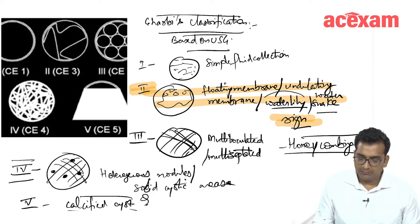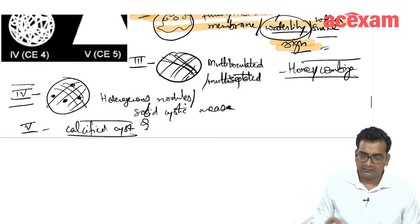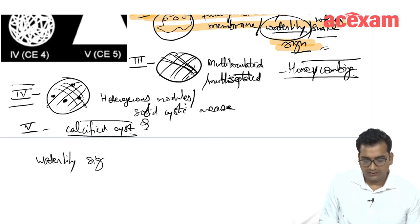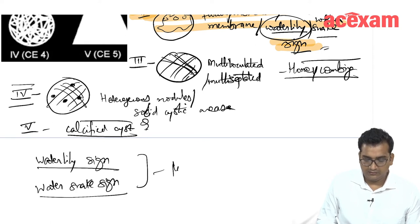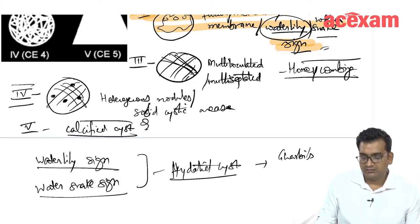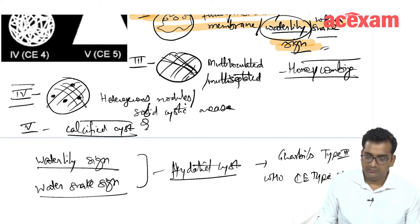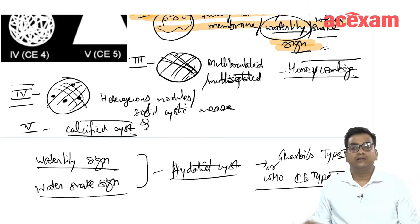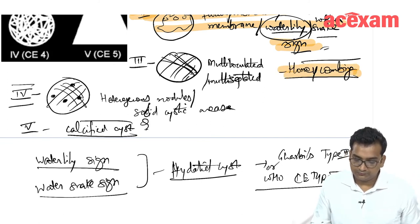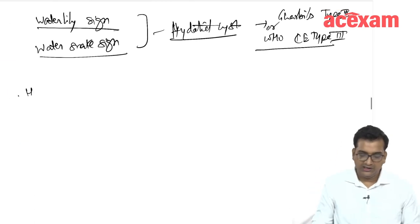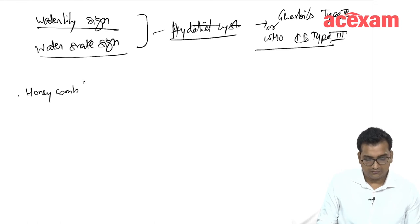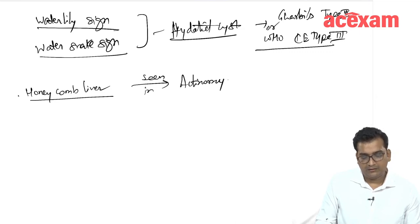Garbi's Type 4 is multiloculated and multi-septated with heterogeneous nodules or solid-cystic areas. Type 5 is calcified cysts. An important point: Garbi's Type 2 corresponds to WHO CE Type 3. The water lily sign or water snake sign is suggestive of Garbi's Type 2 / WHO CE Type 3. Importantly, honeycomb liver is seen in actinomycosis, not hydatid disease.